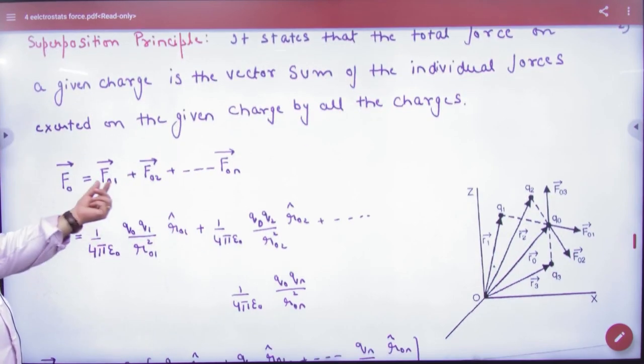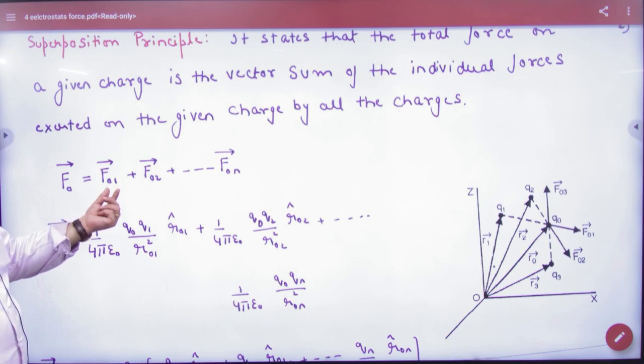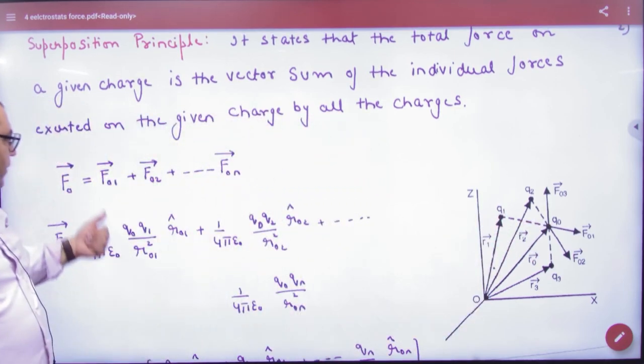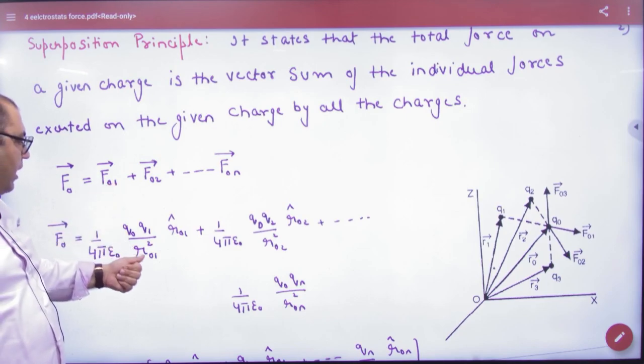Now in the sum, what is the value of F01? 0,1 means q0, q1. So 1 by 4 pi epsilon not, q0 q1 by R0,1 square.